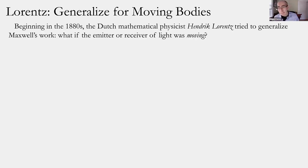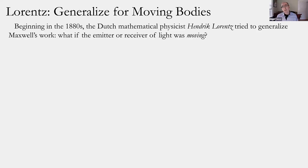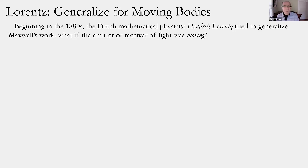This became basically the challenge of the electrodynamics of moving bodies — a title we'll come to many, many times. For much of today's class, we'll look at how a particular mathematical physicist, Hendrik Lorentz, tried to make sense of this — taking on the task of trying to generalize Maxwell's treatment to the case of moving senders or receivers of light.